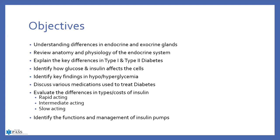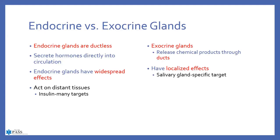Endocrine glands are ductless and they secrete hormones directly into circulation — basically into the bloodstream — and they have a widespread effect. That is what insulin is. When we talk about an endocrine gland, the pancreas, the islets of Langerhans, and the beta cells within that islet are responsible for creating insulin. Insulin ends up in the bloodstream, has a widespread effect, and acts on distant tissue with many different targets.